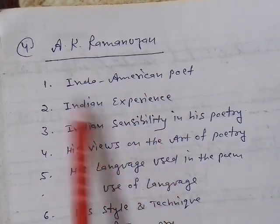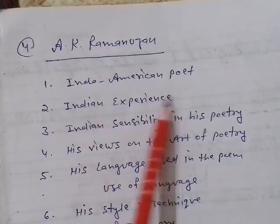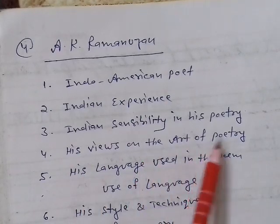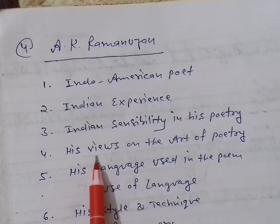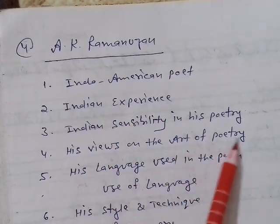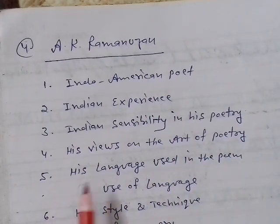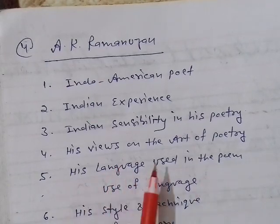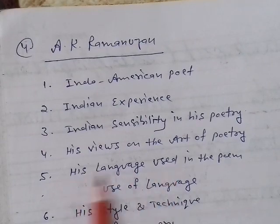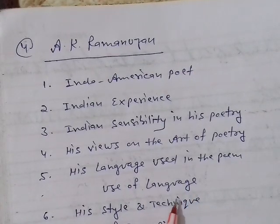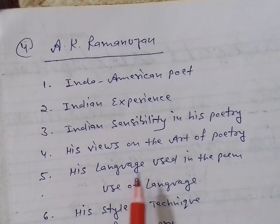The next heading is 'Indian Sensibility.' We find Indian sensibility in the poems of A.K. Ramanujan because he was an Indo-Anglian poet. The fourth heading is his views — his views on the art of poetry — what he thinks of the art of poetry. In my last video I have given a detailed description of all these headings. The fifth heading is his language — what kind of language he has used in his poems.